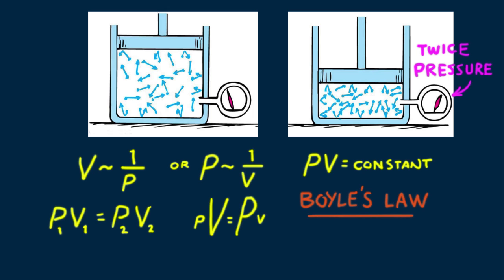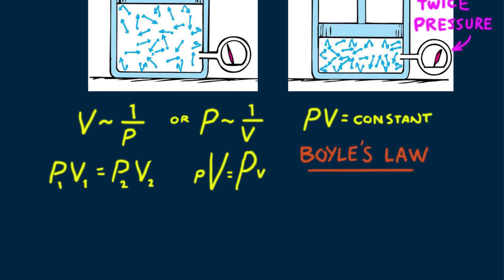A general law that takes temperature changes into account, discovered more than a century later, is P₁V₁ over T₁ equals P₂V₂ over T₂, where T₁ and T₂ represent the first and second absolute temperatures, measured in the SI unit for temperature called the Kelvin. I mention this general law as a footnote here, as we'll treat absolute temperatures in Kelvins in later lessons.